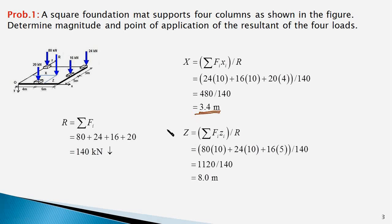In a similar fashion we can determine the Z coordinate of the resultant force and that will be equal to the sum of moments of all the forces about the x axis. The 80 kN force is at a distance of 10 meters from the x-axis. The 24 kilonewton force is also at a distance of 10 meters from x-axis. The 16 kilonewton force is at a distance of 5 meters from x-axis and the 20 kilonewton force is on the x-axis.